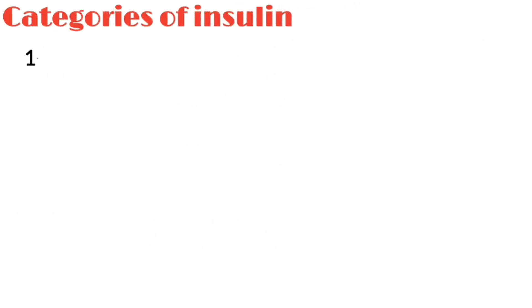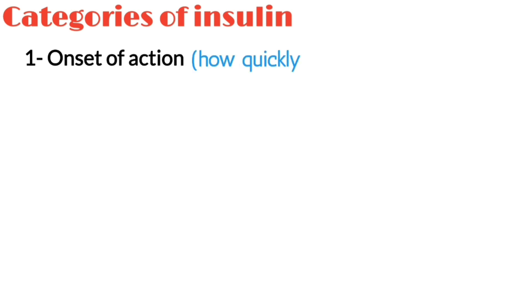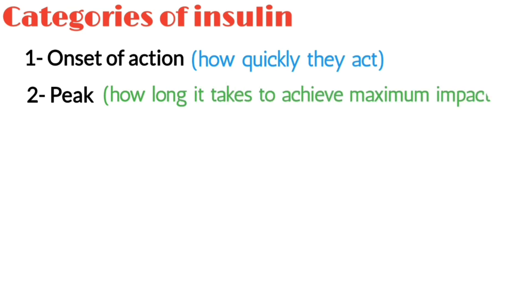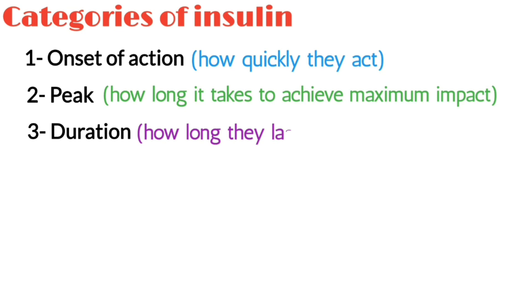Insulins are categorized into various classes by differences in: 1. Onset — how quickly they act. 2. Peak — how long it takes to achieve maximum impact. 3. Duration — how long they last before they wear off.